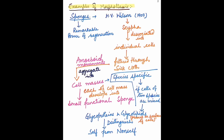The first example of morpholexis is sponges, which have a remarkable power of regeneration. This was shown by H.V. Wilson in 1907. He found that if the body of the sponge is dissociated into individual cells and filtered through a silk cloth, these cells by their amoeboid movements aggregate into different cell masses.